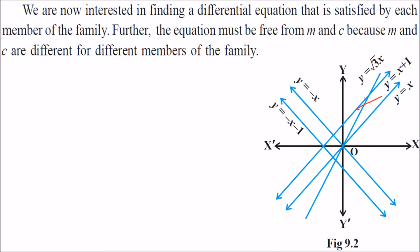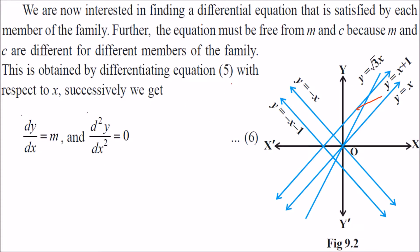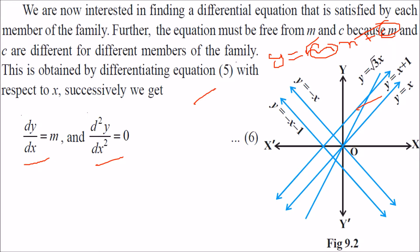How to find out the family of these lines? Here is a very important aspect: y equal to mx plus c has two parameters — c and m, two constants. You have to differentiate it twice to eliminate m and c. Previously, x square plus y square equal to r square had only one constant r, so you differentiated it only one time. But here, you have to differentiate it twice.